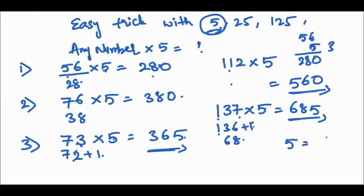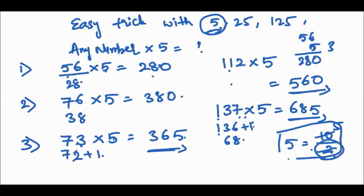The reason behind this trick is that 5 equals 10 divided by 2. So we divide every number by 2 — that's why we take half of the number — and then multiply by 10, adding a zero.